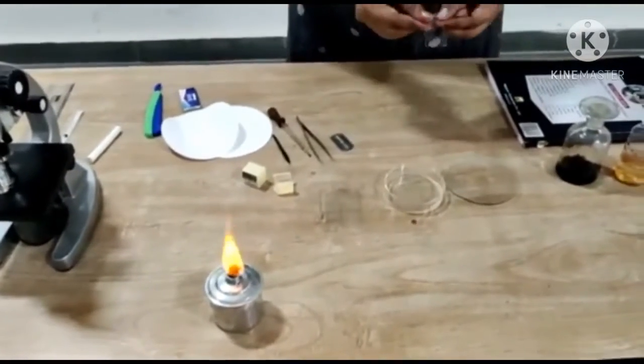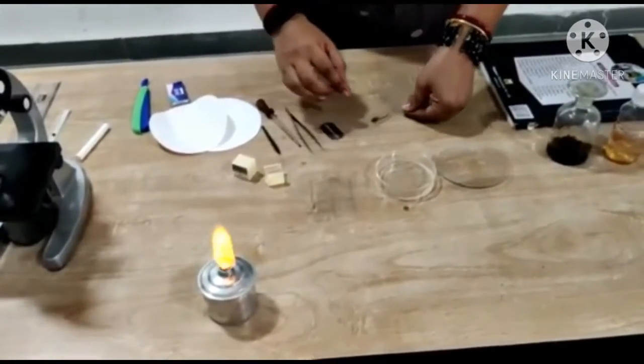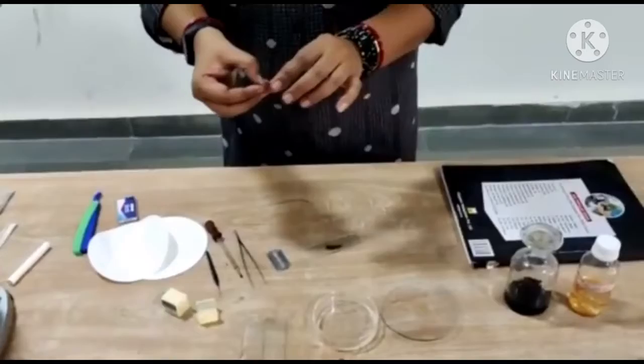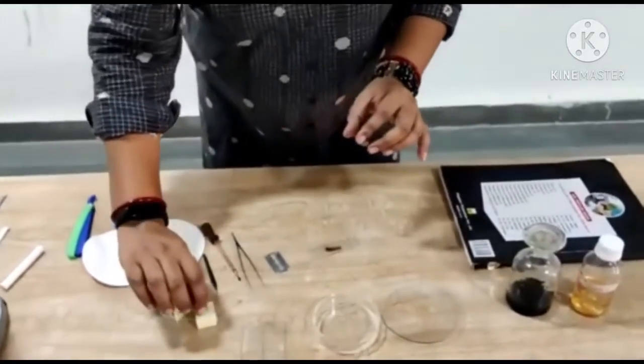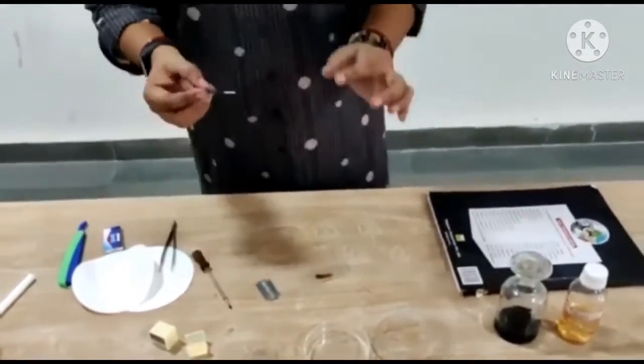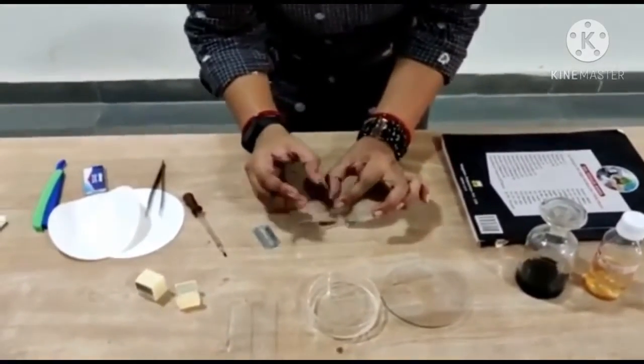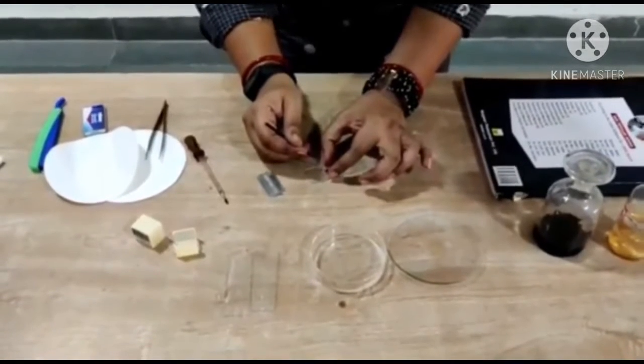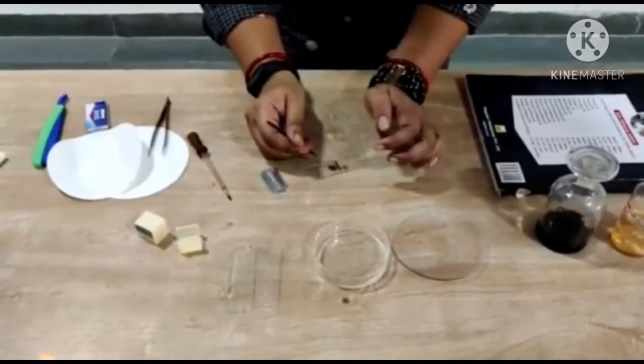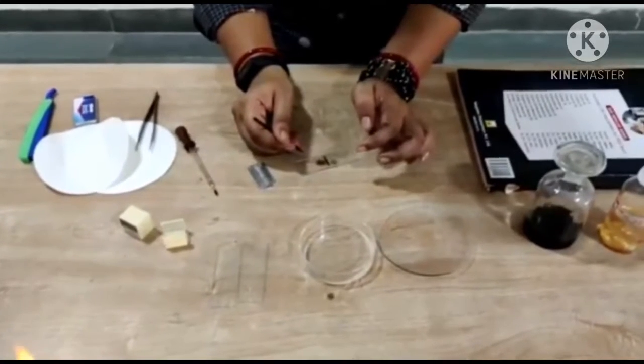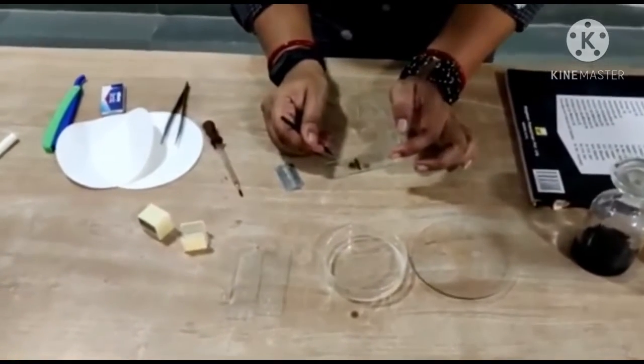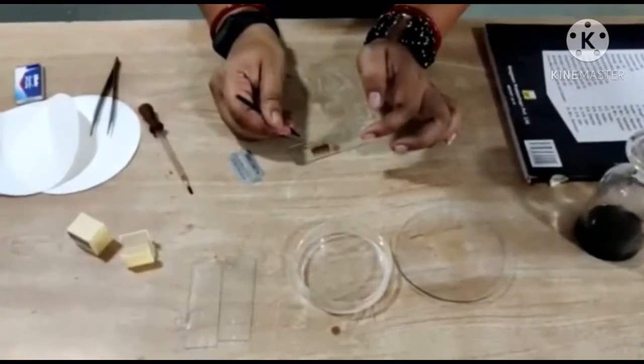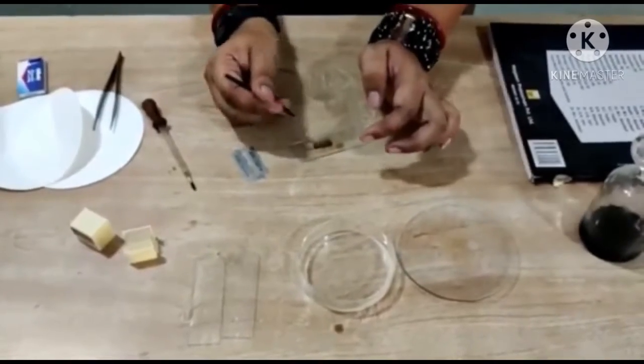After warming up, we will put the cover slip very gently. For putting the cover slip, you should take help of a needle. We will put the cover slip just on the material very slowly to avoid the air bubbles.